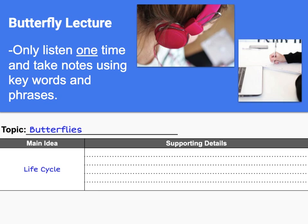Sometimes this takes a week, but it can take up to 8 months. The caterpillar has changed into a butterfly. It is ready to fly away, lay more eggs, and start the cycle all over again.